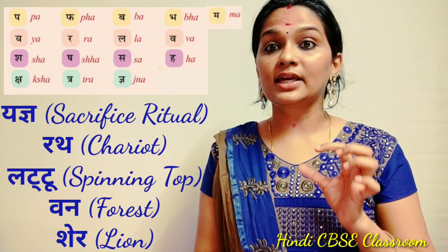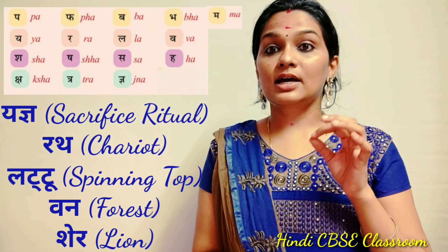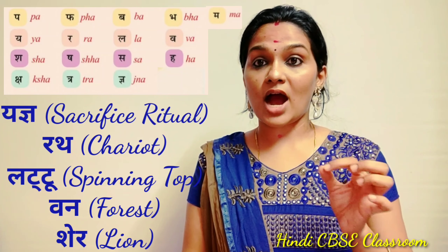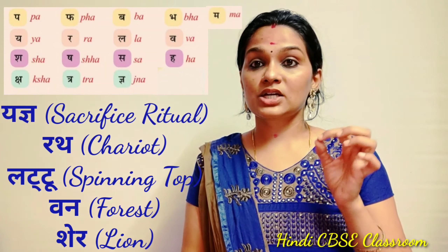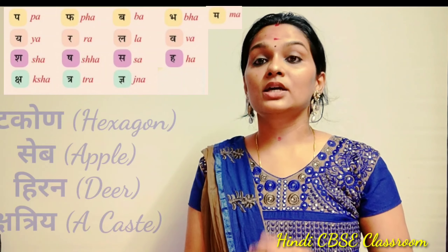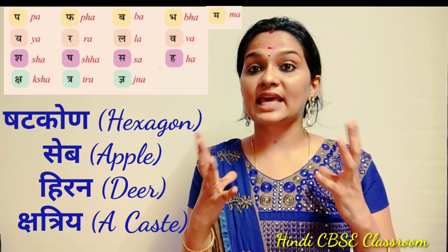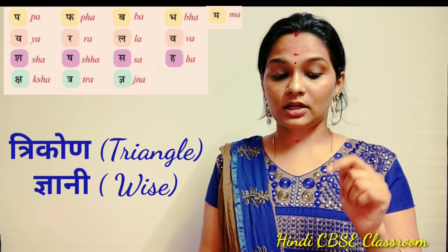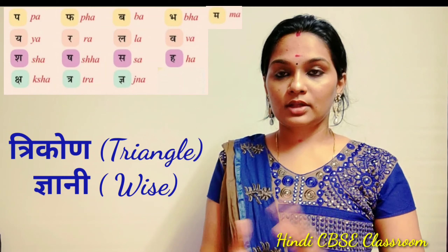Then comes Ya, Ra, La, Va, Sha, Sha, Sha, Sa, Ha, Tra, Nya. Ha for Hiran. Then Ksha for Kshatriya, Tra for Trikone (triangle), and Nya for Nyani.